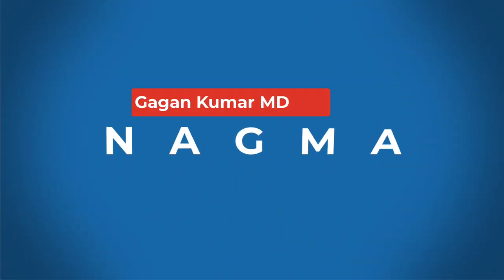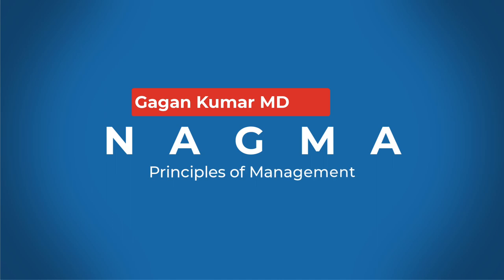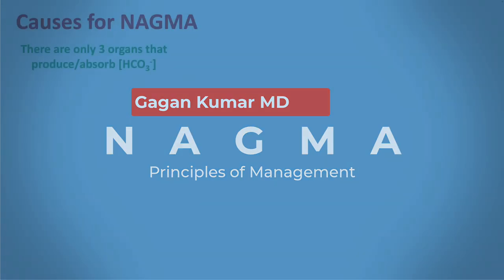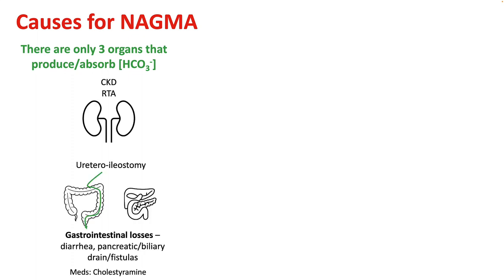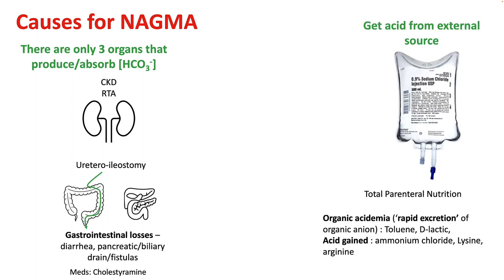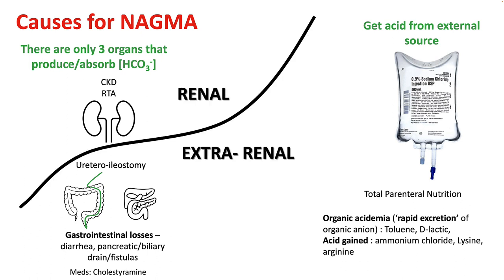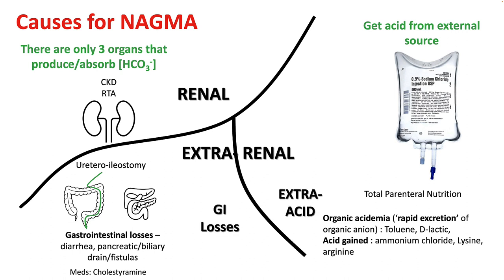Hello everyone. Today we'll be talking about non-anion gap metabolic acidosis and how to manage it. In the previous lecture, we learned that there are three organs that manage your bicarb: the kidneys, GI tract, and hepatobiliary tree. You can also get acid from external sources like sodium chloride. So you divide your non-anion gap acidosis into renal and extra-renal causes, and extra-renal causes can be further divided into GI losses and extra acid.